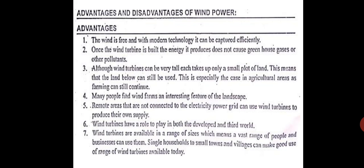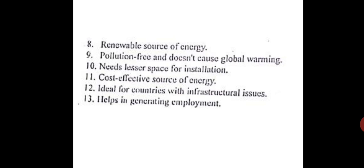Wind turbines are available in a vast range of sizes, meaning single households to small towns and villages can make good use of them. In India, earlier wind turbines were around 200 kilowatts — catering to about 100 houses — but today they are almost 2 megawatts, catering to nearly a thousand houses. So the growth has been tenfold, and turbines of various sizes are available for small villages and even small towns.